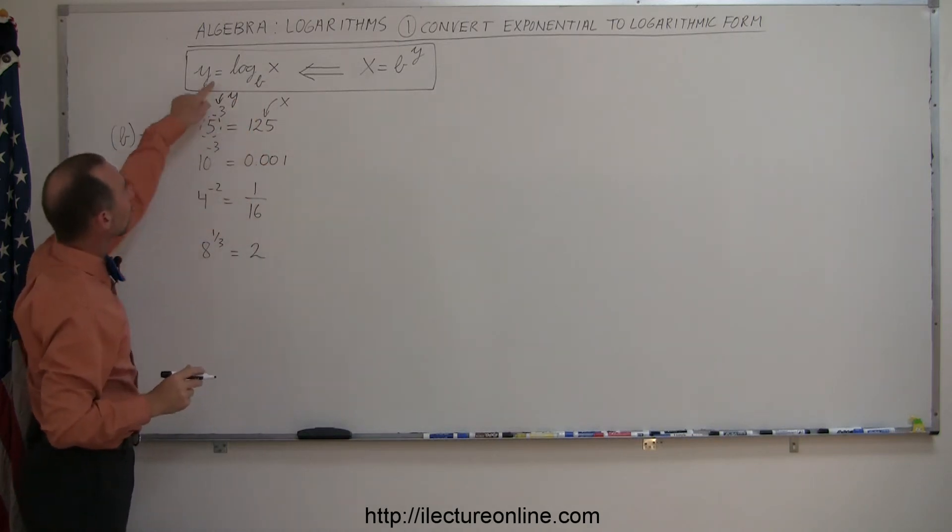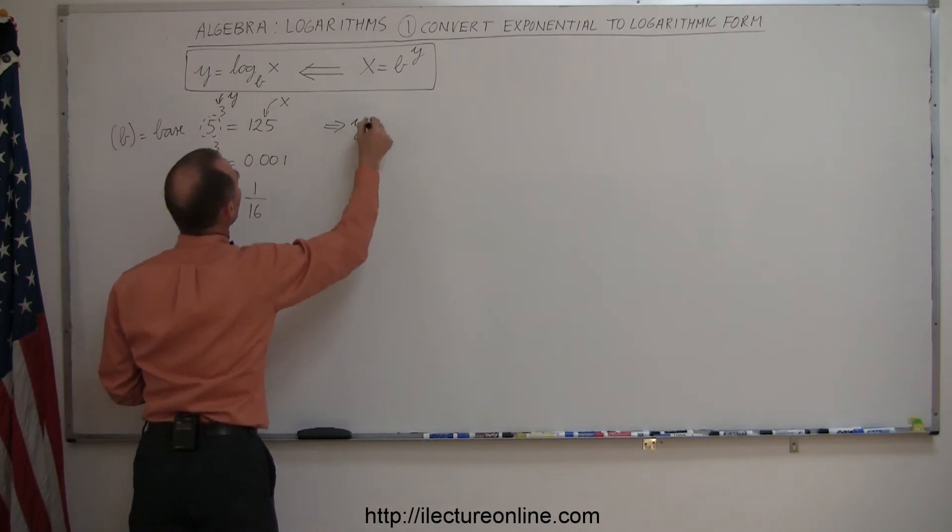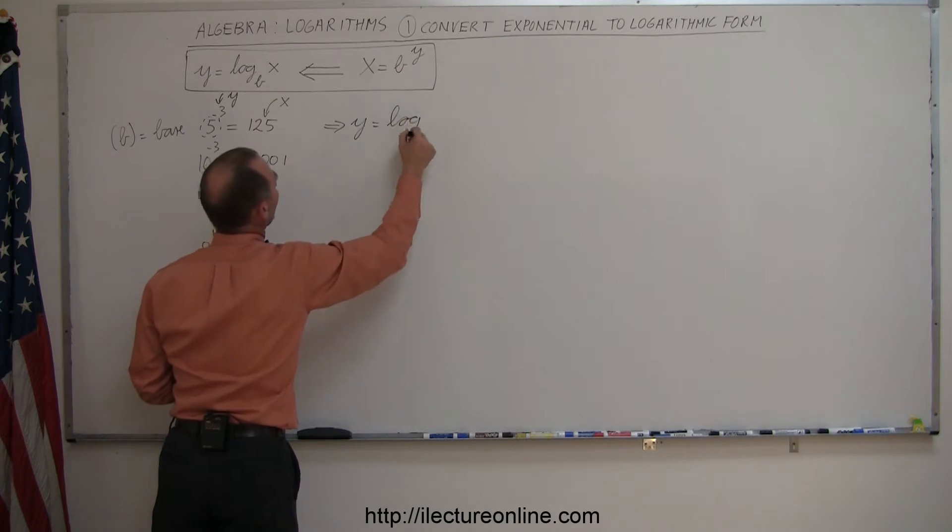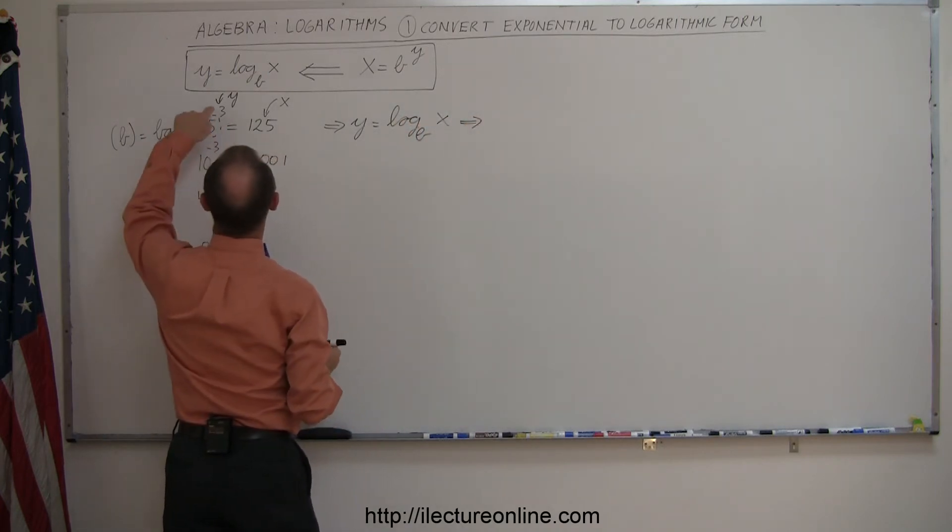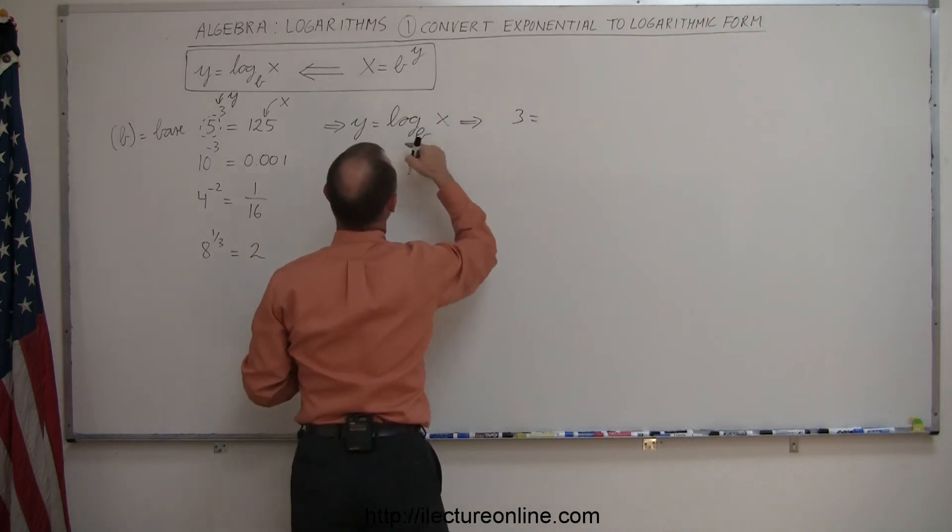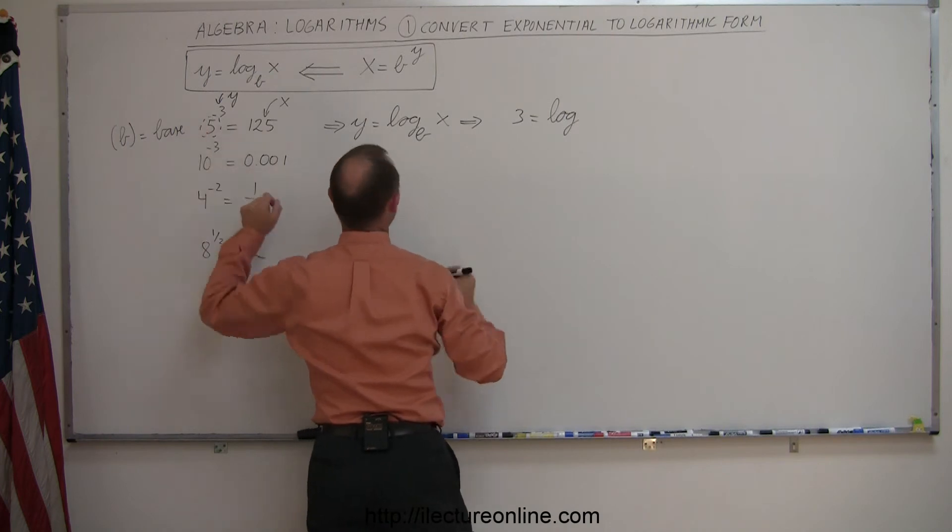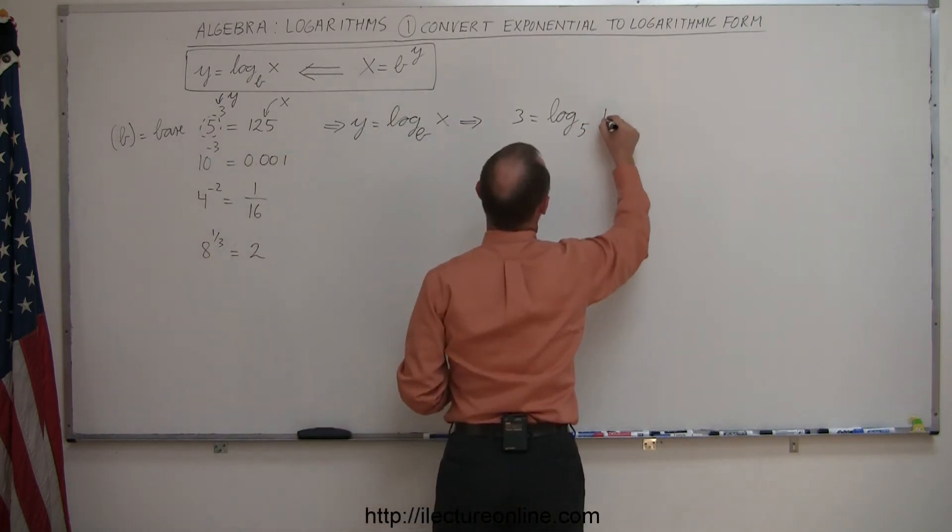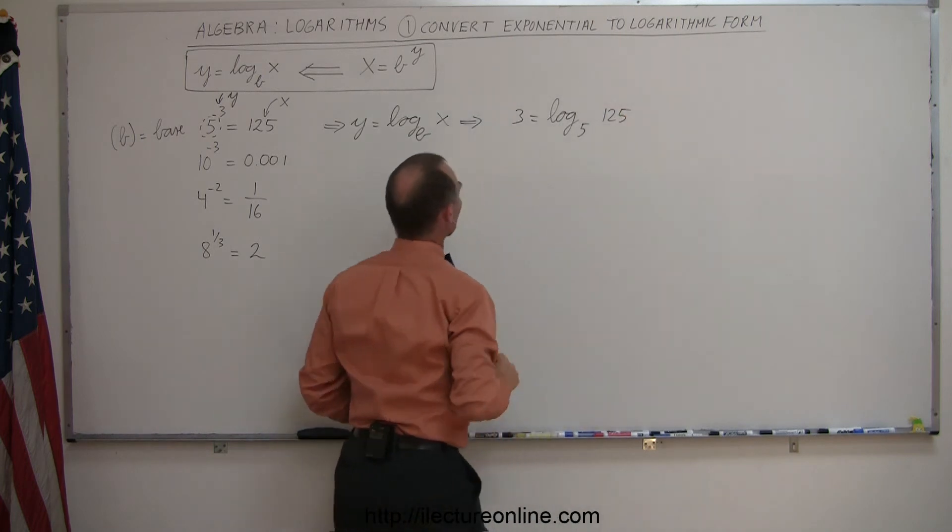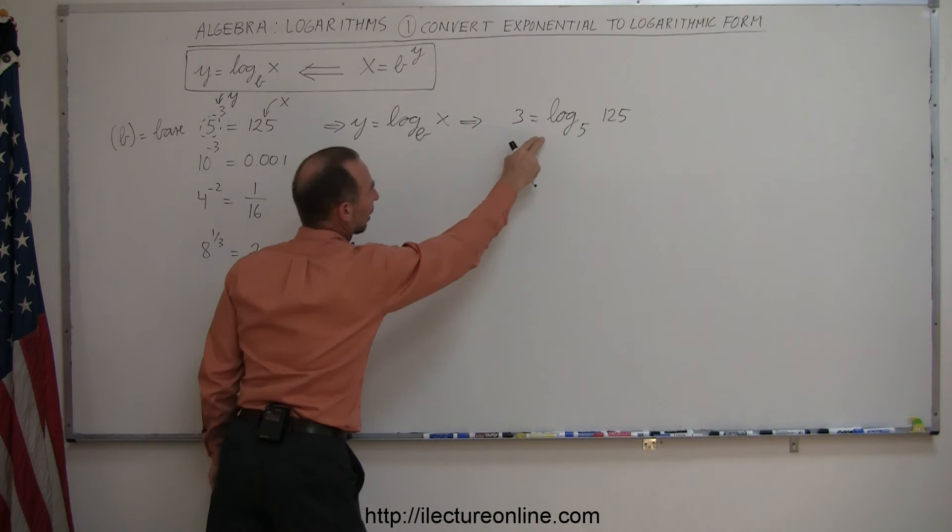So we want to plug it into this equation right there. We take Y equals the log base B of X. In this case Y was equal to 3, so 3 equals the log of base 5, and X was 125. And there you go. That's the conversion from the exponential form to the logarithmic form.